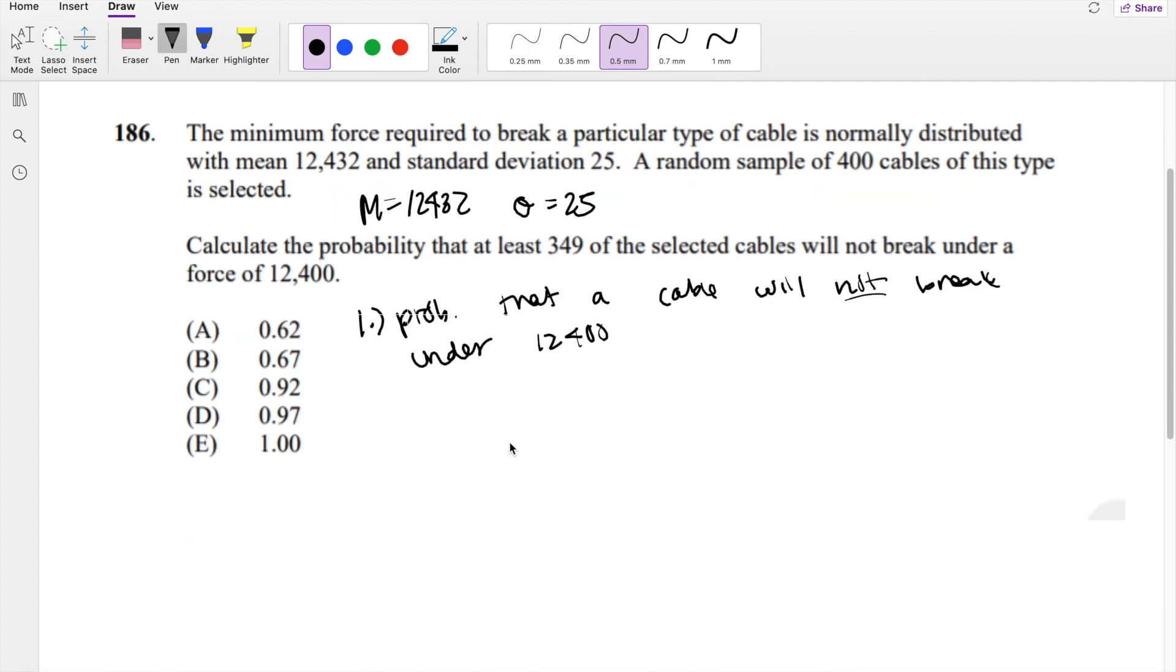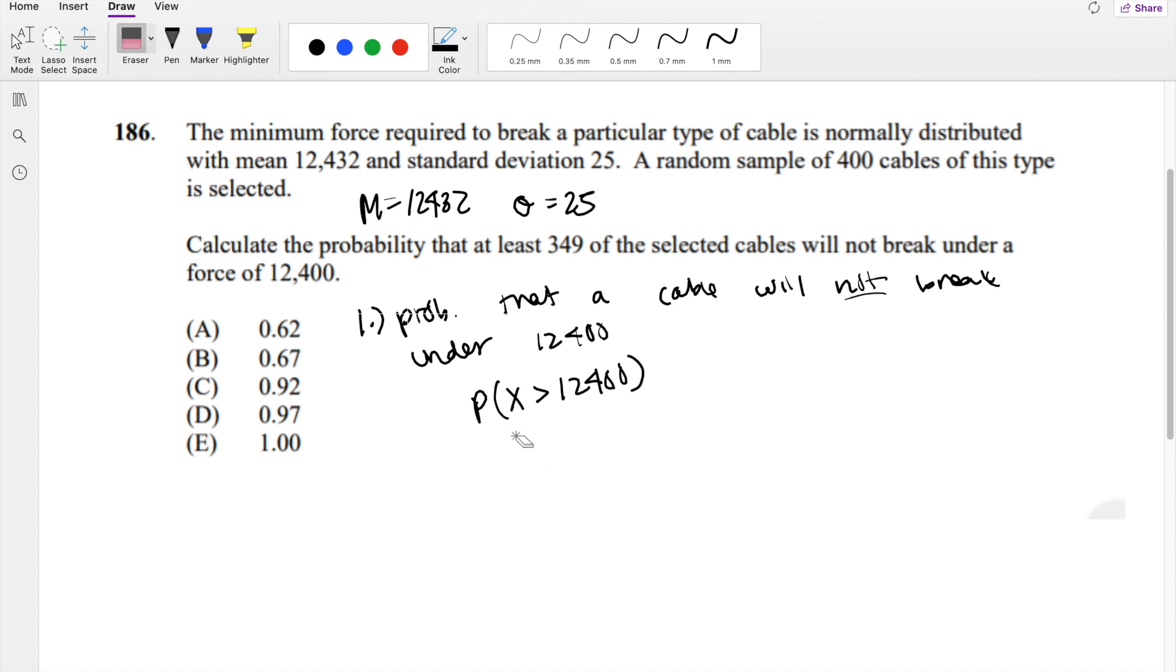So how do we do that? That's basically saying what's the probability that x is greater than 12,400, where x is the probability that it's still okay. Because after 12,400, after this amount of force, what's the probability that the cable is still working? So that's the probability that x is greater than that number.